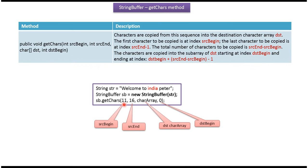Here I am passing SourceBeginIndex 11, SourceEndIndex 16, DestinationCharacterArray, and DestinationBeginIndex. What this getChars method will do is it will copy the substring 'India' and place it in the character array.